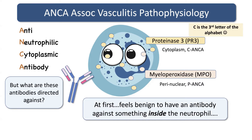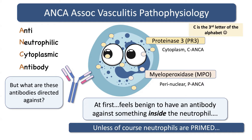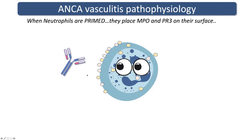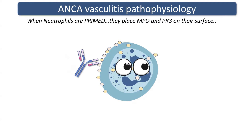So it feels a little bit benign at first to have an antibody against something that's inside the neutrophil, because you think to yourself, well, these might never come into contact with each other — one's outside the cell and one's inside the cell. So surely we're safe, right? What's the worst that can happen? And that's true until the neutrophil is primed. The whole game changes when the neutrophils are primed. Neutrophils are primed by the immune system when something's going on — by cytokines or whatever — and when they're primed and getting ready to get involved in an immune response, they'll actually place these MPOs and PR3s on their surface. So now we have a big problem. If we have this antibody in our circulation, now we have a massive problem. That antibody can come along and bind to those MPO or PR3 molecules. And when it does that, this neutrophil will explode, it will release its NET, and we will get vasculitis.